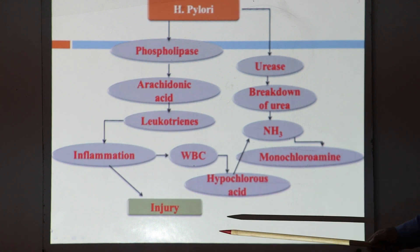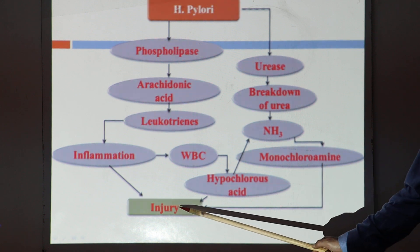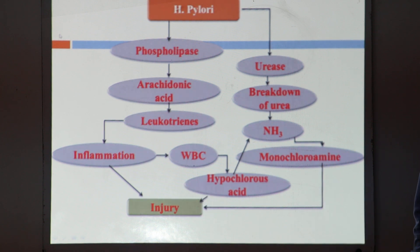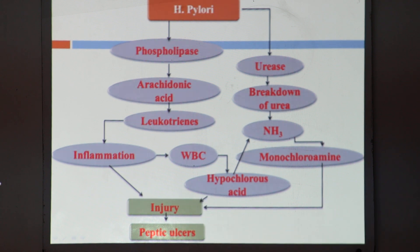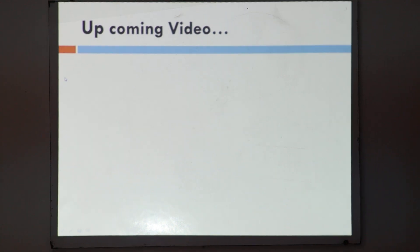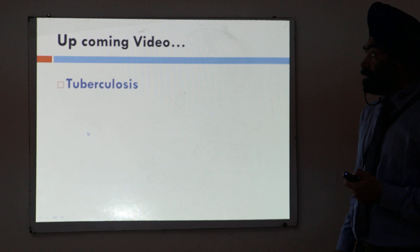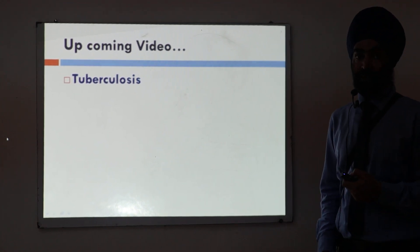Inflammation, hypochlorous acid, and monochloramine all produce injury to the mucous layer and then the submucosa, causing peptic ulcers. So this is what I wanted to discuss about the three theories: gastrin link theory, impaired defense mechanism, and H. pylori. In the subsequent video I will discuss things related to tuberculosis. Thank you.